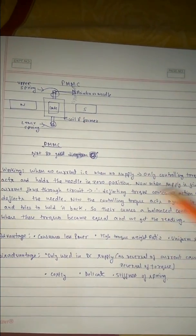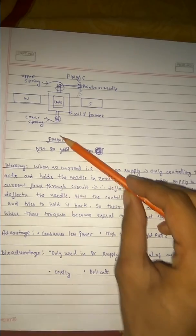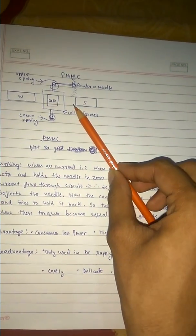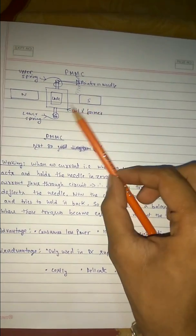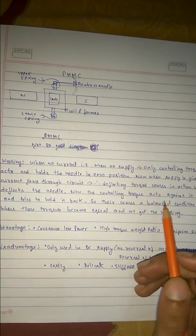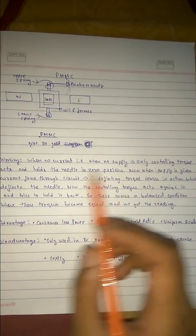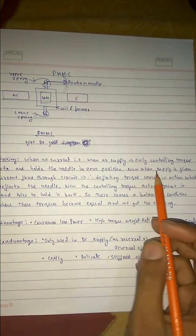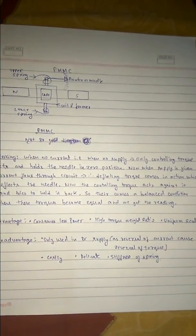Now, when the supply is given, that is current flows, this needle which was in zero position deflects — as we generally see in experiments. This deflection is because of the deflecting torque. So when there is no current, no supply, only the controlling torque acts and holds the needle in zero position. Now when supply is given, current flows through the circuit and the deflecting torque comes into action, which deflects the needle.